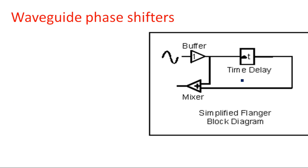Now, how to insert a phase shift? A signal is directly taken without any phase shift and it is passed through a buffer which applies some delay to the same signal. After that, the delayed signal and the original signal are both applied to a mixer, which then produces the phase shifting effect.